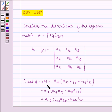Therefore, determinant A equals a11 times a22 times a33 minus a23 times a32, minus a12 multiplied by a21 times a33 minus a31 times a23, plus a13 multiplied by a21 times a32 minus a22 times a31.